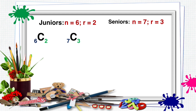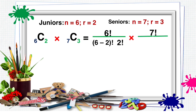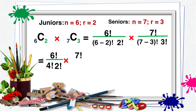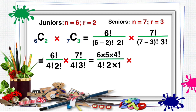Juniors and seniors are different groups, so multiply. That is equal to 6 factorial all over the quantity 6 minus 2 factorial times 2 factorial, multiplied by 7 factorial all over the quantity 7 minus 3 factorial times 3 factorial. Rewrite as 6 factorial all over 4 factorial times 2 factorial, multiplied by 7 factorial all over 4 factorial times 3 factorial. Split 6 factorial into 6 times 5 times 4 factorial, all over 4 factorial times 2 times 1. Split 7 factorial into 7 times 6 times 5 times 4 factorial, all over 4 factorial times 3 times 2 times 1.